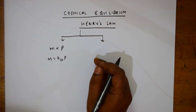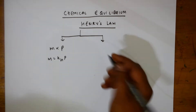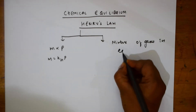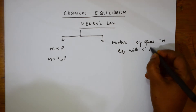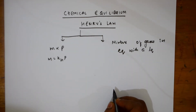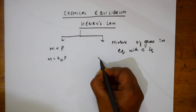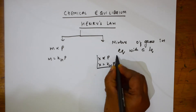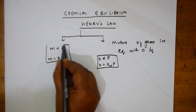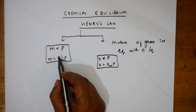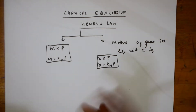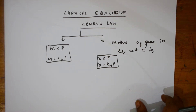The second formula to remember applies when you have a mixture of gases in equilibrium with a liquid. In that case, you speak in terms of mole fraction: x is directly proportional to p, so x is equal to kH times p. The difference is that the first formula concerns gas per unit volume of solvent, while the second concerns gases in equilibrium with a liquid.